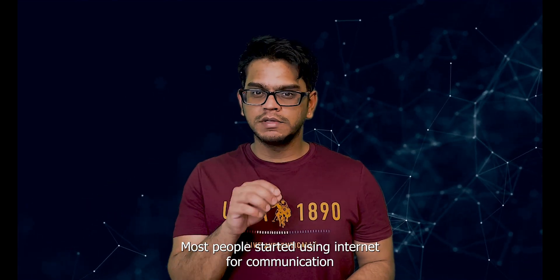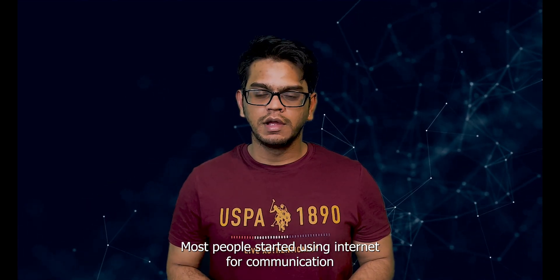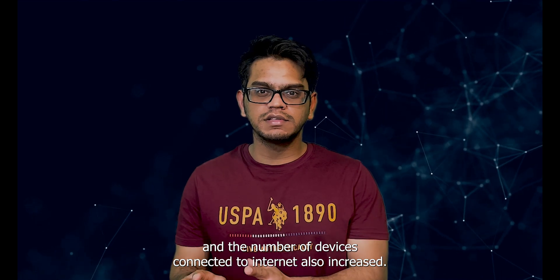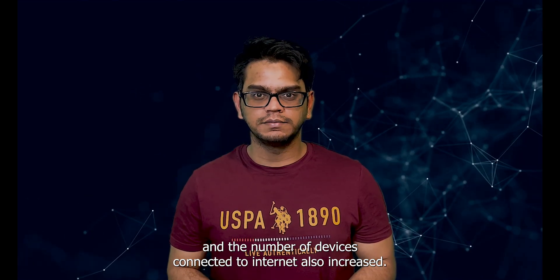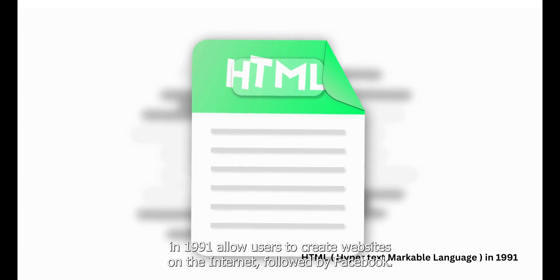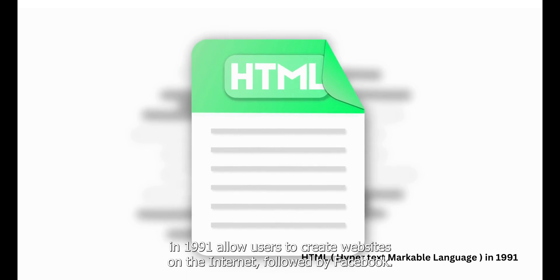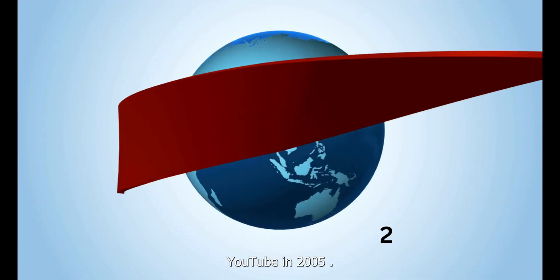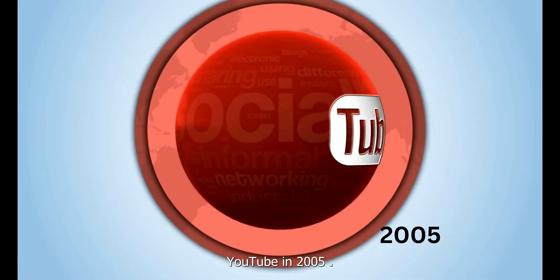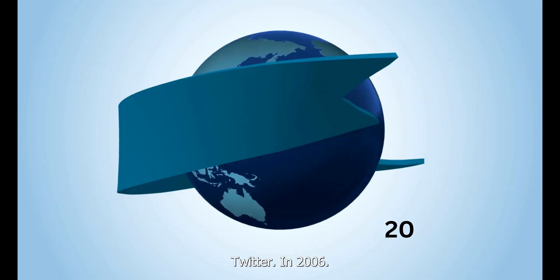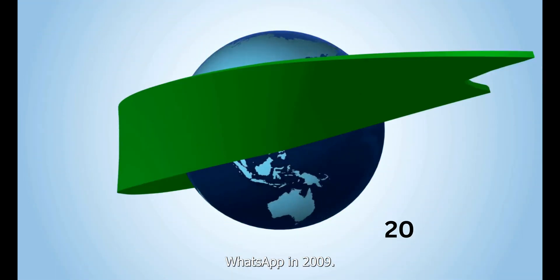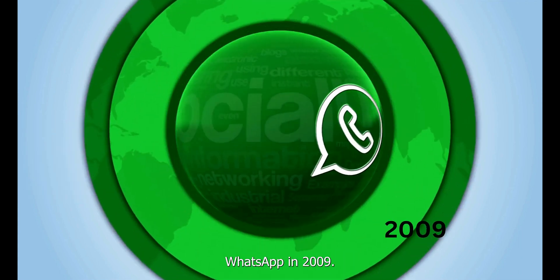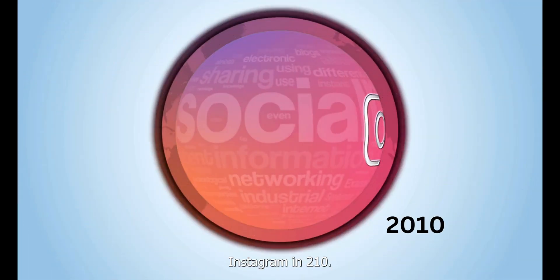As the internet became popular worldwide, more people started using it for communication and the number of devices connected to the internet also increased. HTML — HyperText Markup Language — was introduced in 1991, allowing users to create websites on the internet, followed by Facebook in 2004, YouTube in 2005, Twitter in 2006, WhatsApp in 2009, and Instagram in 2010.